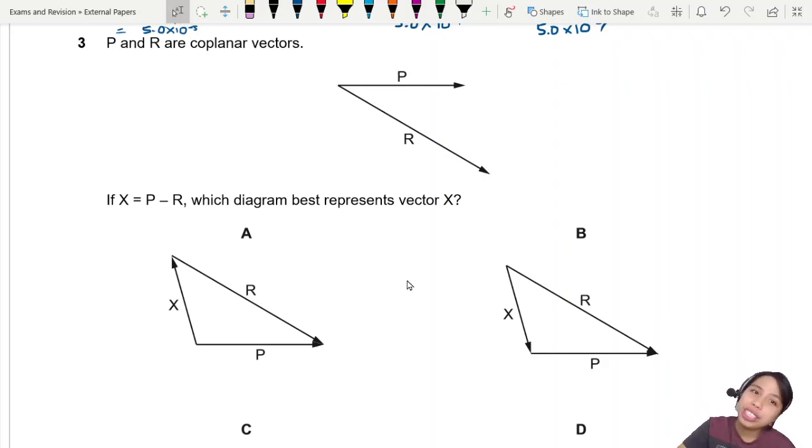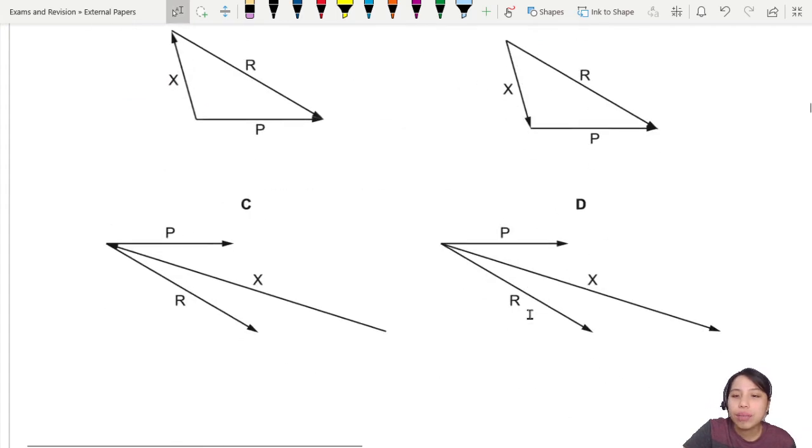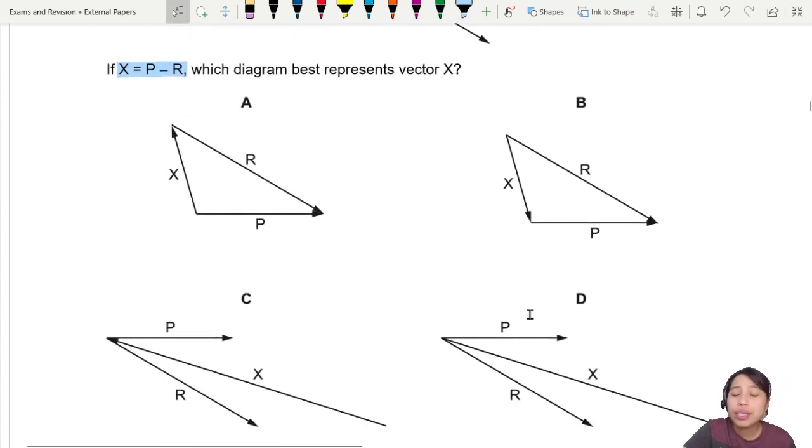OM20 P11 question 3. P and R are coplanar vectors. If x equals P minus R, when you see minus, please be very careful what the minus means. Which diagram best presents vector x? Where do you even start? How do you even start?